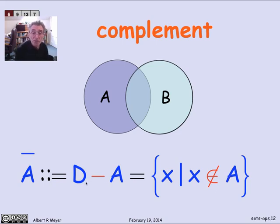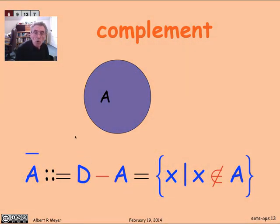So if we're going to picture that, we're looking at the whole orange region, all of the stuff that's not in A if we think of the whole slide as representing the domain of discourse D.